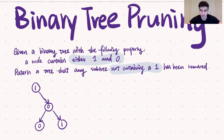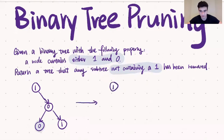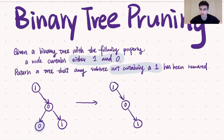In this situation the only subtree that does not contain a one is the subtree rooted at zero at the very bottom of the tree. So the resulting tree after being passed into this algorithm would be one, zero, one. If you want to attempt this question yourself you can pause the video. For those who have already attempted it, we're going to move on.